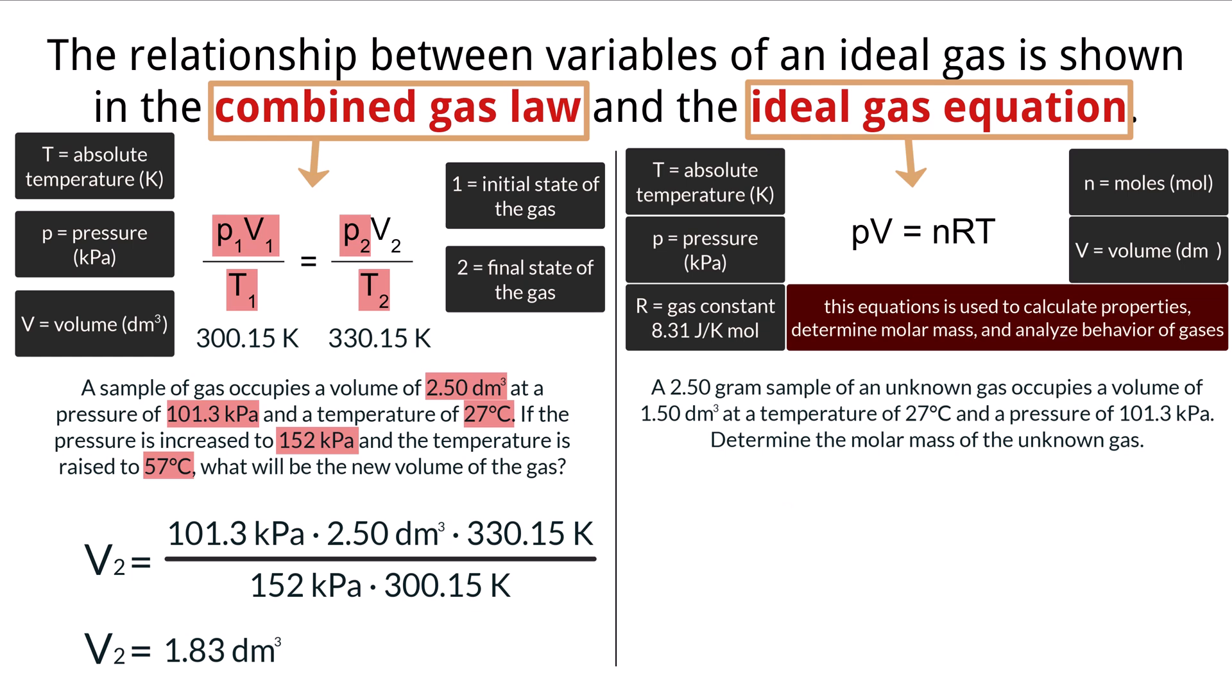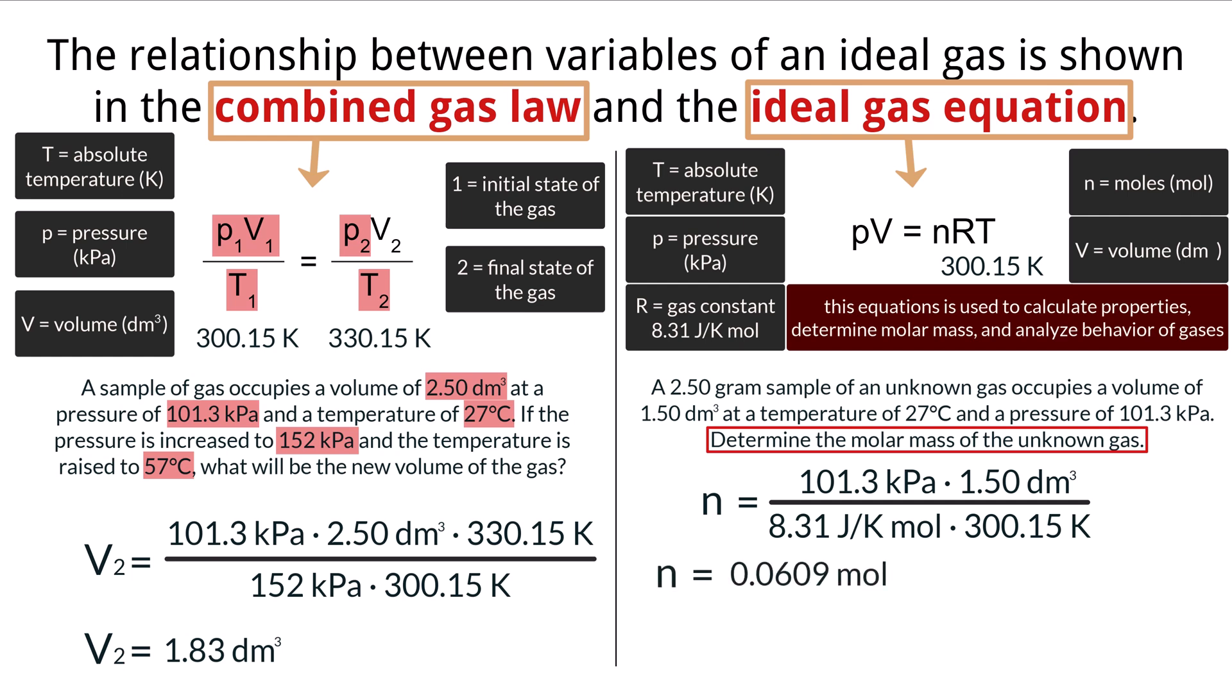We start again by converting these Celsius measurements into Kelvin. We do that by adding 273.15 to 27 to get 300.15 Kelvin for the temperature. Now we are asked to find the molar mass of the unknown gas, and we can use our ideal gas equation to first find the moles of the gas, and then use that to find the molar mass. So we can rearrange our equation like this to solve for moles. We plug in all of the appropriate numbers and perform the calculation to come out with an answer of n equals approximately 0.0609 moles.